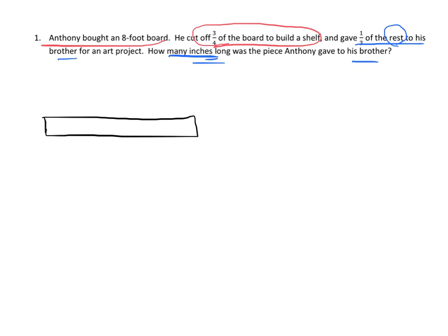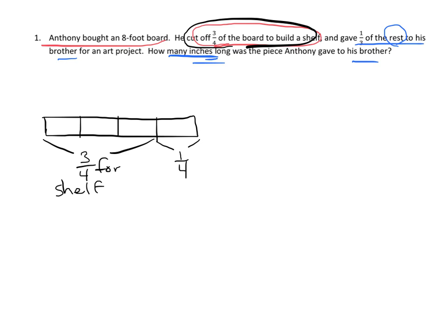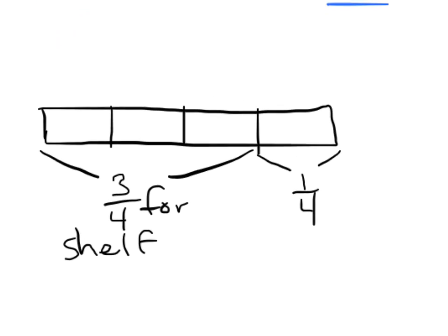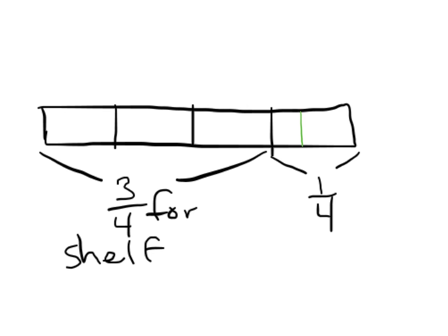We're going to start by drawing a tape diagram. It says he cut off three-quarters of the board to build a shelf, so here's our three-fourths for the shelf and here's the one-quarter that's left over. It says he gave one-third of the rest to his brother, so that means he gave one-third of one-fourth. He gave this much right here to his brother.